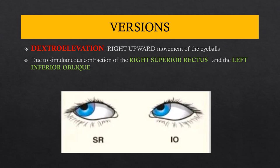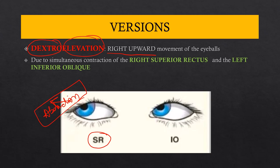Dextro elevation means turning the eyeball towards the right and upwards. To achieve this right upward movement, the right eye abducts and then moves upwards — the muscle causing elevation in abduction is the superior rectus. In the left eye, the eye adducts, and the oblique muscle causing elevation in adduction is the inferior oblique. Therefore, dextro elevation requires simultaneous contraction of the right superior rectus and the left inferior oblique.